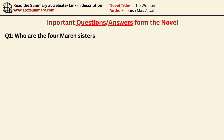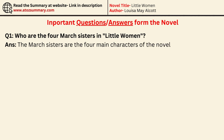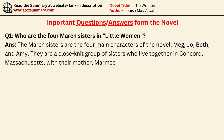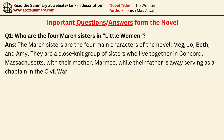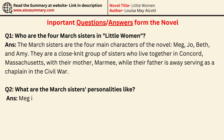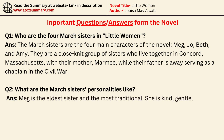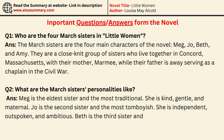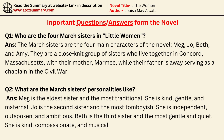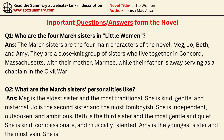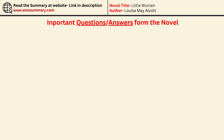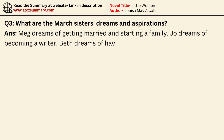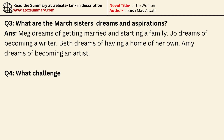Who are the four March sisters? They are Meg, Jo, Beth, and Amy — a close-knit group who live together in Concord, Massachusetts, with their mother Marmee, while their father serves as a chaplain in the Civil War. Regarding their personalities: Meg is the eldest, most traditional, kind, gentle, and maternal. Jo is the second sister, tomboyish, independent, outspoken, and ambitious. Beth is the third sister, the most gentle and quiet, kind, compassionate, and musically talented. Amy is the youngest, most vain, artistic, ambitious, and social. As for their dreams: Meg dreams of marriage and family, Jo dreams of becoming a writer, Beth dreams of having a home of her own, and Amy dreams of becoming an artist.